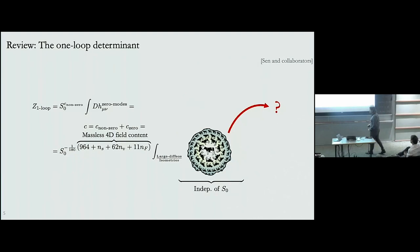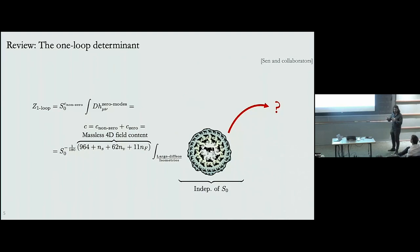In addition to that, you have to integrate over all these large diffeomorphisms. One can be smart about it, absorbing the S_0 dependence into the overall power of S_0, and seemingly this gives you the logarithmic correction to the extremal black hole entropy that people have determined in the past.